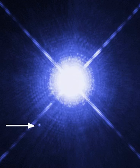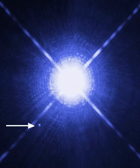A white dwarf's faint luminosity comes from the emission of stored thermal energy; no fusion takes place in a white dwarf wherein mass is converted to energy. The nearest known white dwarf is Sirius B, at 8.6 light years, the smaller component of the Sirius binary star. There are currently thought to be eight white dwarfs among the hundred star systems nearest the Sun.